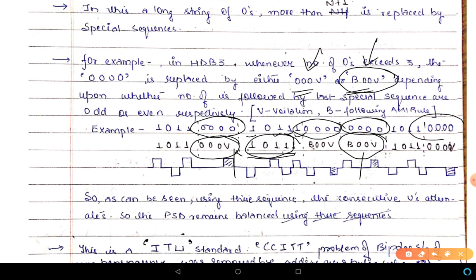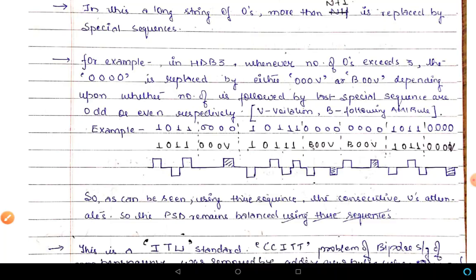For the following group of four zeros, similarly since the number of ones following the previous special sequence is even, we again use 'B00V'. Then for the next group of four zeros, the number of ones following the special sequence is one, two, three — which is odd — so we use '000V'.